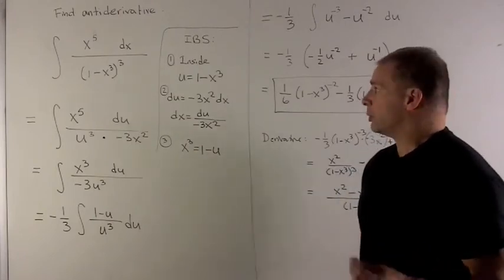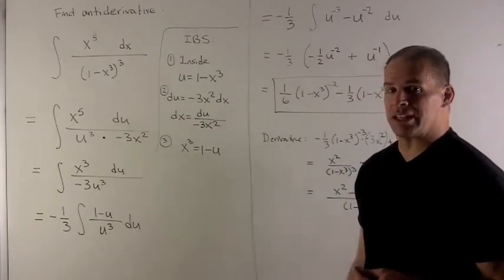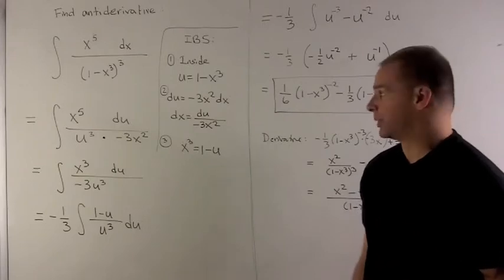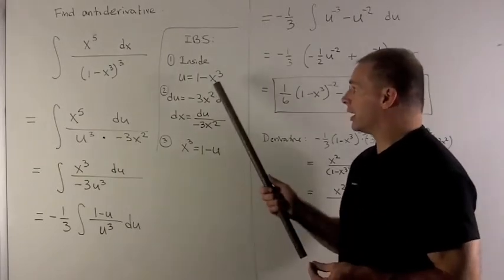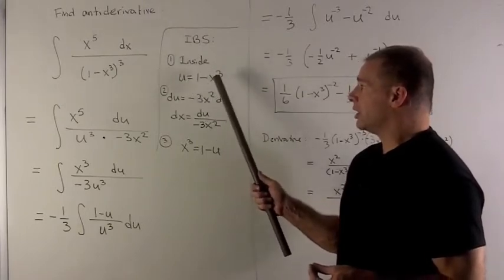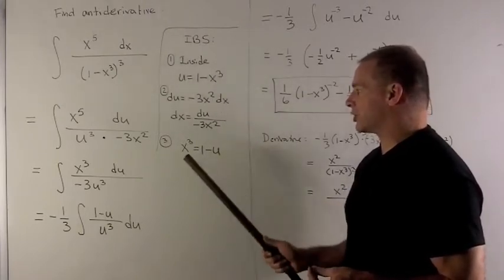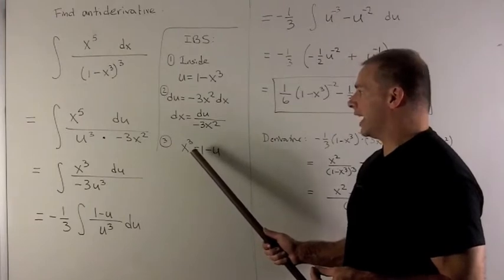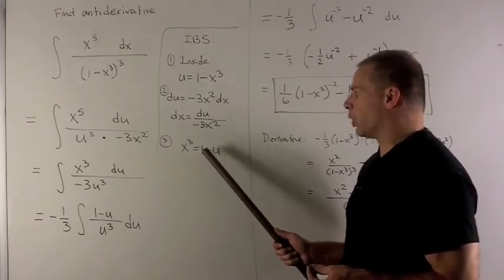So we need to get rid of that. I go back to my integration by substitution checklist and see if we can get rid of an x cubed. I take a look and I notice x cubed actually shows up in my formula for u. So I'm just going to push everything around to get x cubed by itself. In this case it's going to be x cubed equals 1 minus u.